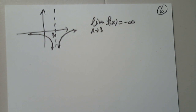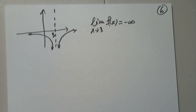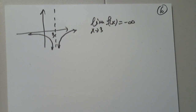Limit from the right of two. Two is right here. That's from the left. As x approaches two from the right, function values get closer and closer to one. We're not asked about f of two.